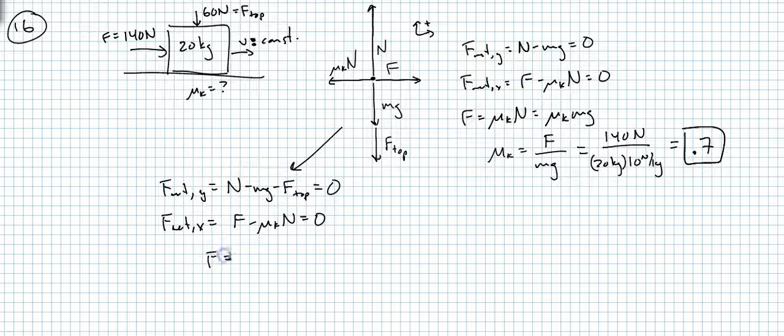So we're looking for F now. F is mu sub K times N. But N is MG plus F top. So this is mu sub K times MG plus F top.